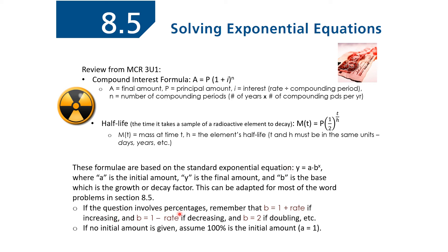If the question involves percentages, remember that B, your base, is going to be 1 plus the rate. If the percent is 18%, then that's 0.18, so 1 plus 0.18 if it's increasing, or 1 minus 0.18 if it's decreasing. If you're not given an initial amount, usually you're assuming you have 100% of whatever you're starting with — whether it's light, money, or something else — so that would be the same as a 1.